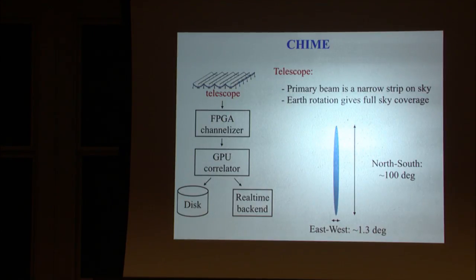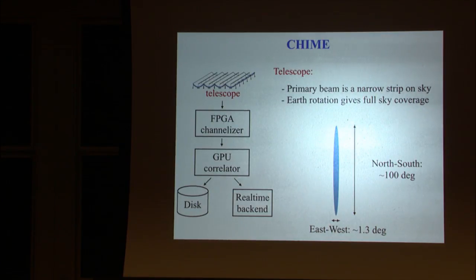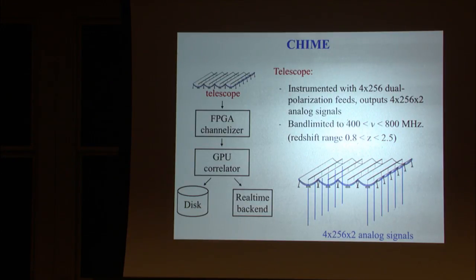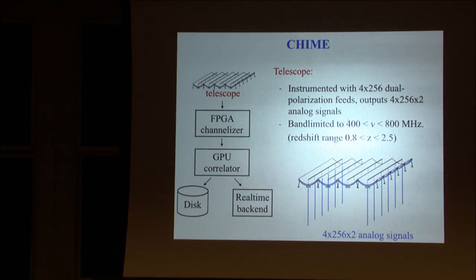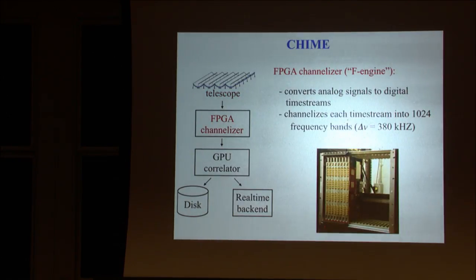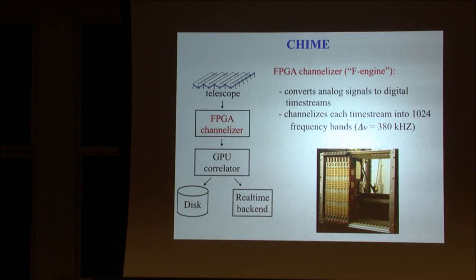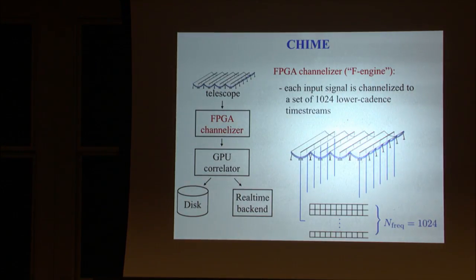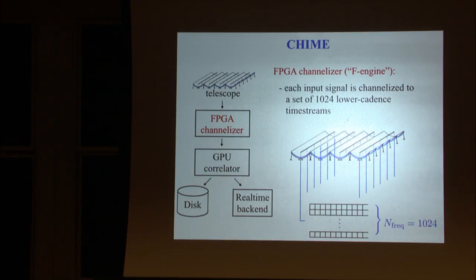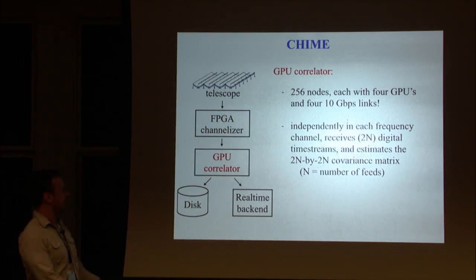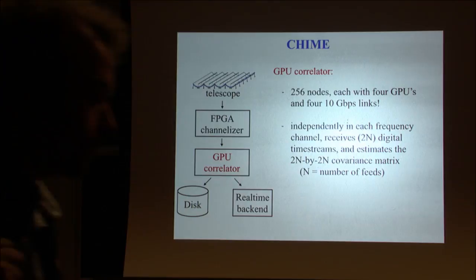I'll briefly walk through these stages. The primary beam of the instrument is a narrow strip on the sky. That's the primary beam of the cylinder. As the earth rotates, we scan. We measure about half the sky. Each one of these feeds going down the middle is transmitting analog measurements of the electric field at the antenna location. This channelizer is taking each of those measurements and channelizing it into 1,024 frequency subbands, so we channelize each of these antennas into 1,024 time streams.